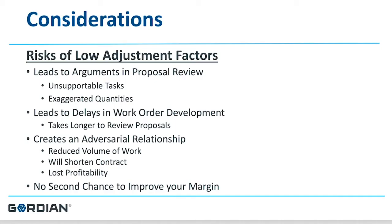The risk of a low adjustment factor is that you might not do a lot of work, or you realize you've bid too low and try to put inappropriate line items in a proposal — then have to defend them with the owner. That can damage the contractor-owner relationship. It can lead to unsupportable tasks within a proposal, padded or exaggerated quantities, long delays in developing a work order, and an adversarial relationship with your owner, which can result in reduced volume of work, a shortened contract length, and lost profits.